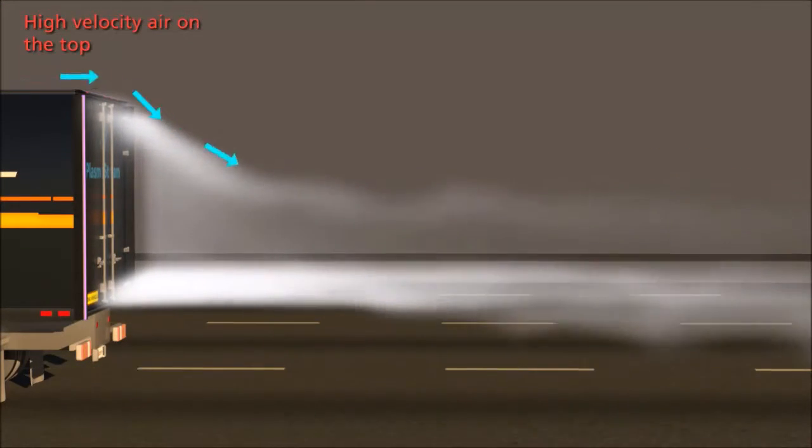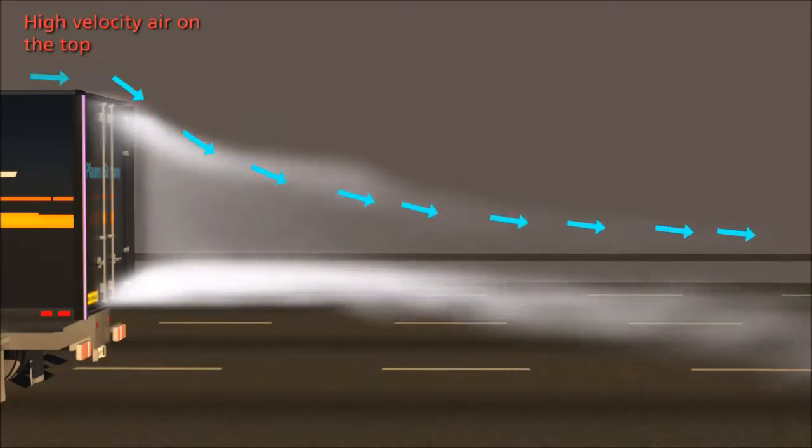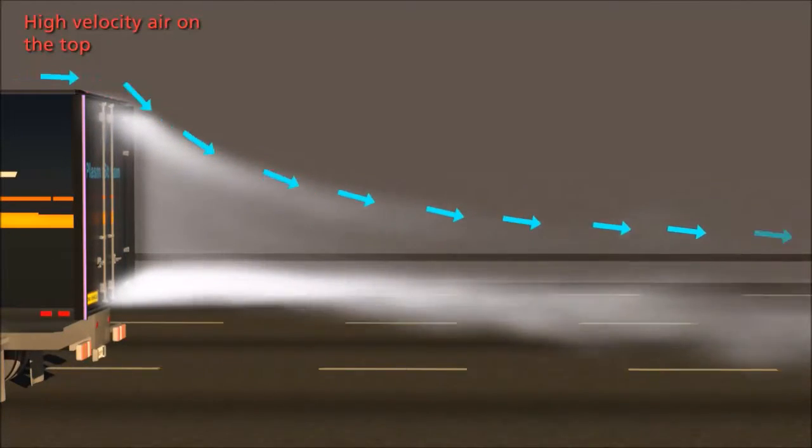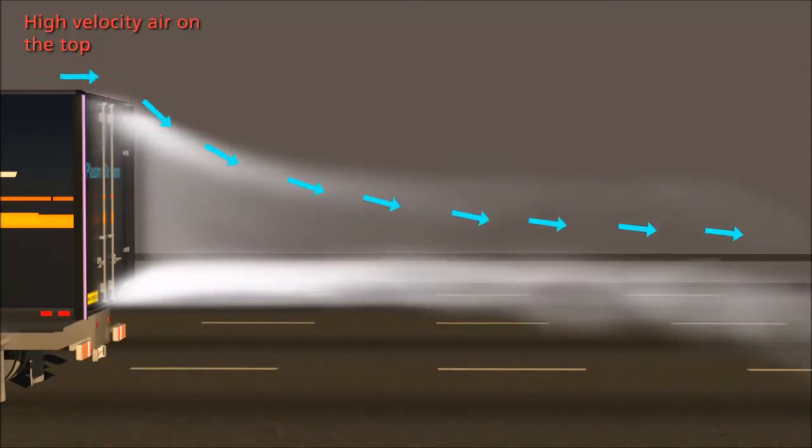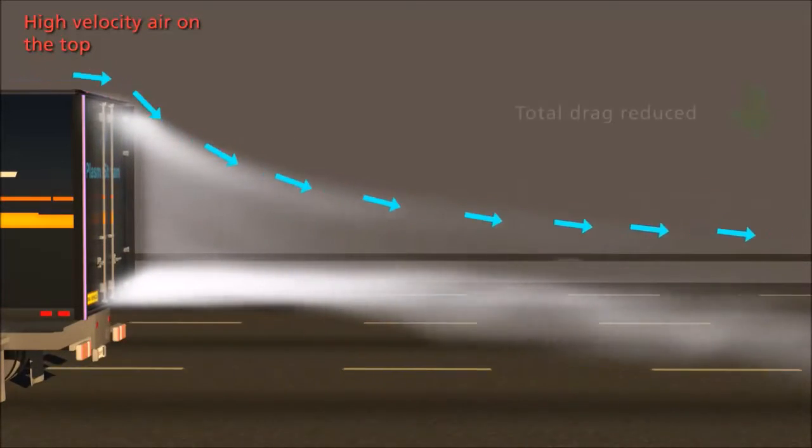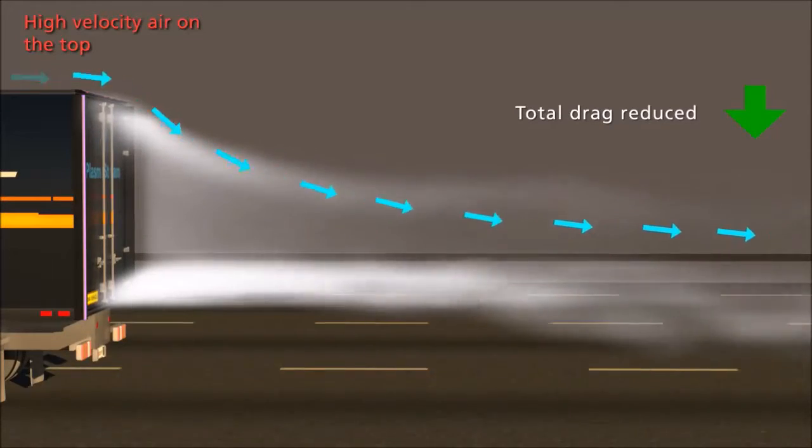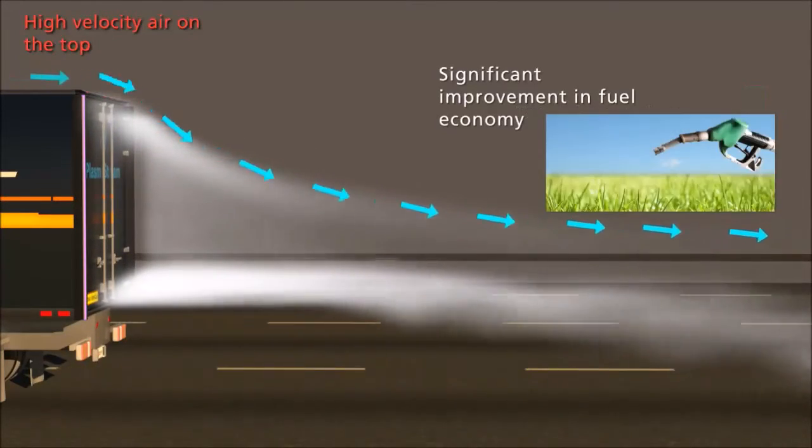This is achieved by using plasma actuators to divert high-velocity air around the sides of the trailer to the low-pressure turbulent vortex region on the back of the trailer. By doing this, the overall drag is reduced, which will directly correlate to improvement in fuel consumption.